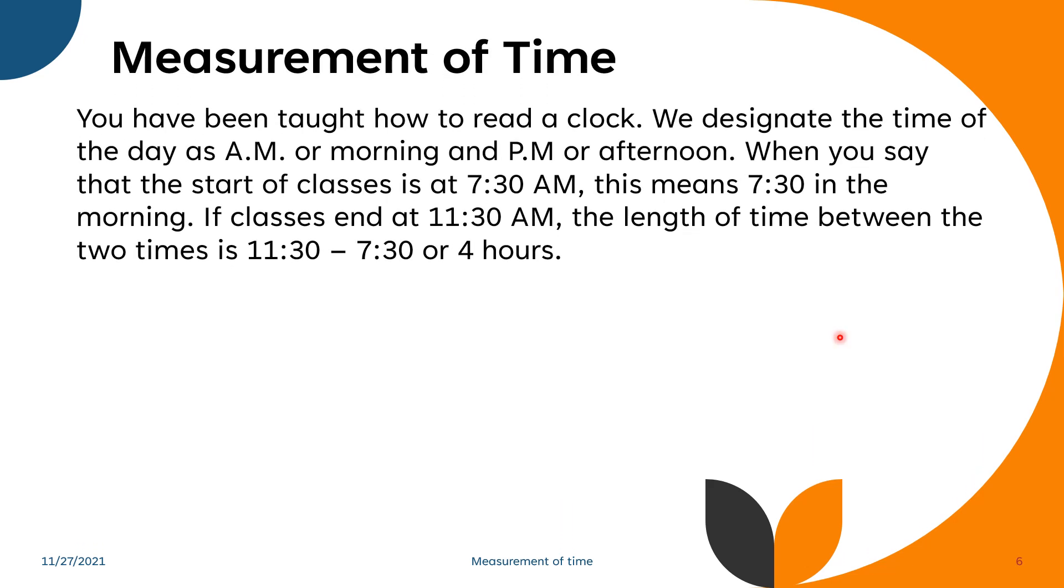You have been taught how to read a clock. We designate the time of the day as a.m. or morning, and p.m. or afternoon. When you say that the start of class is 7:30 a.m., this means 7:30 in the morning. If classes end at 11:30 a.m., the length of time between the two times is 11:30 minus 7:30, or 4 hours.